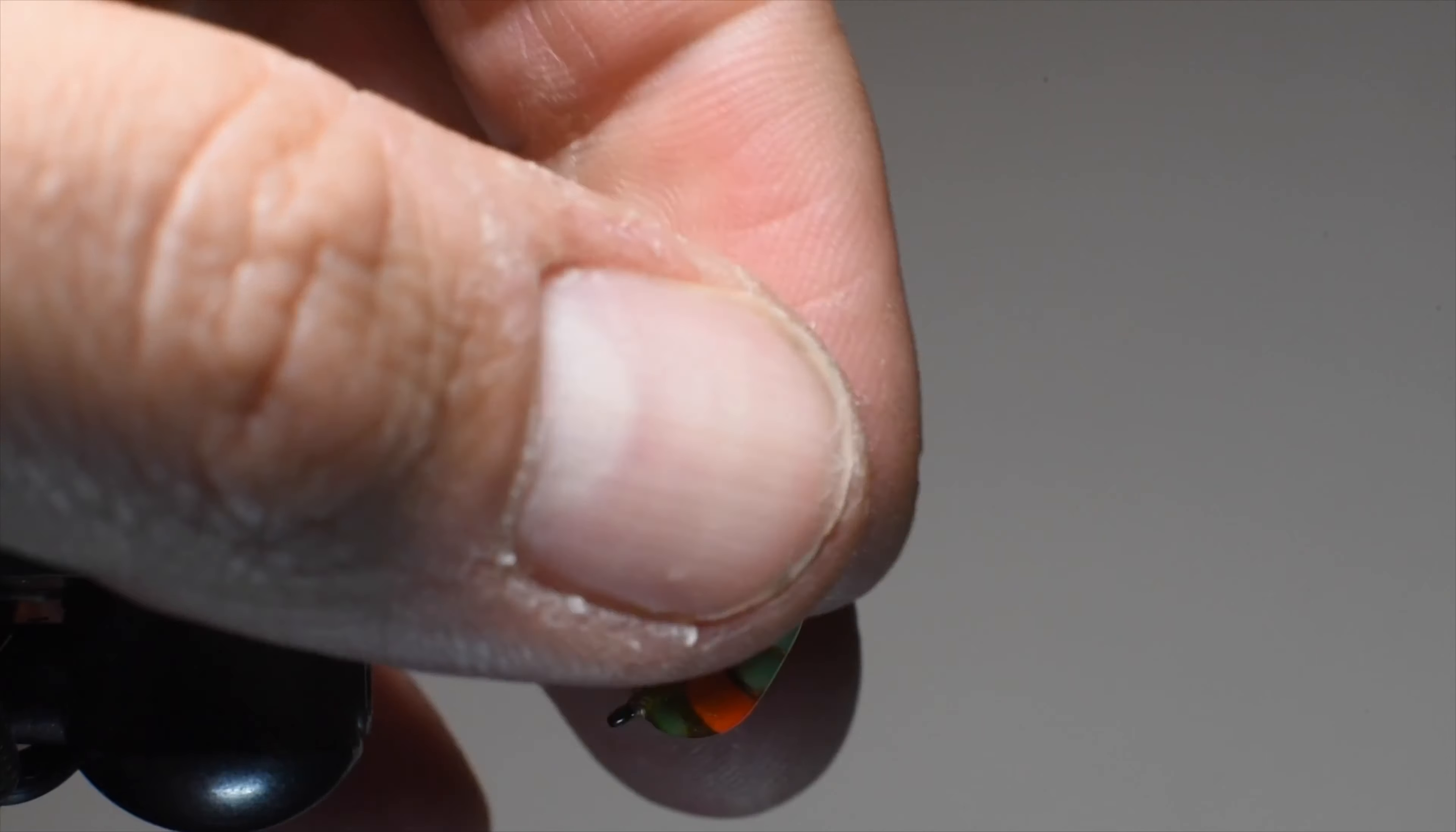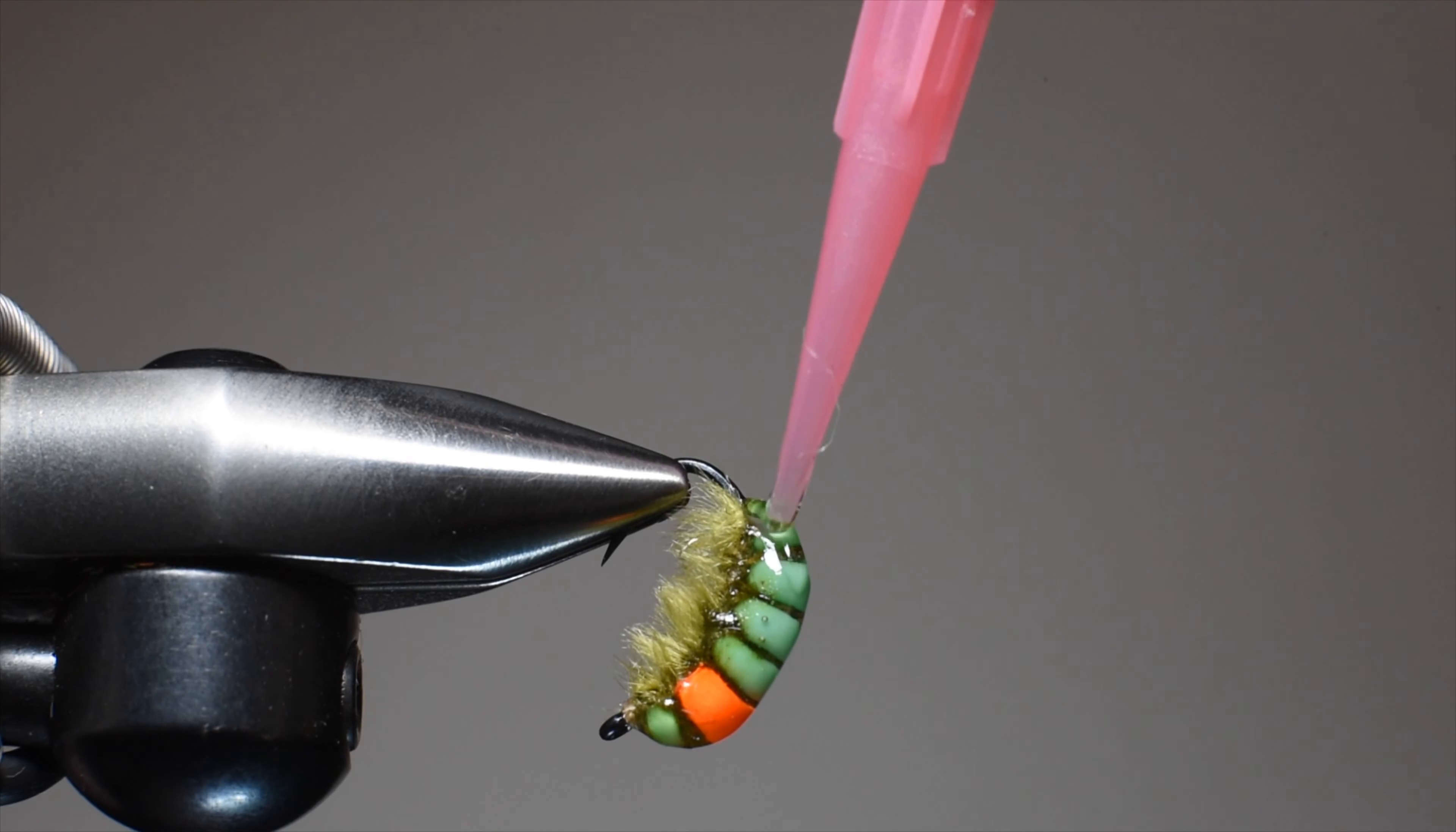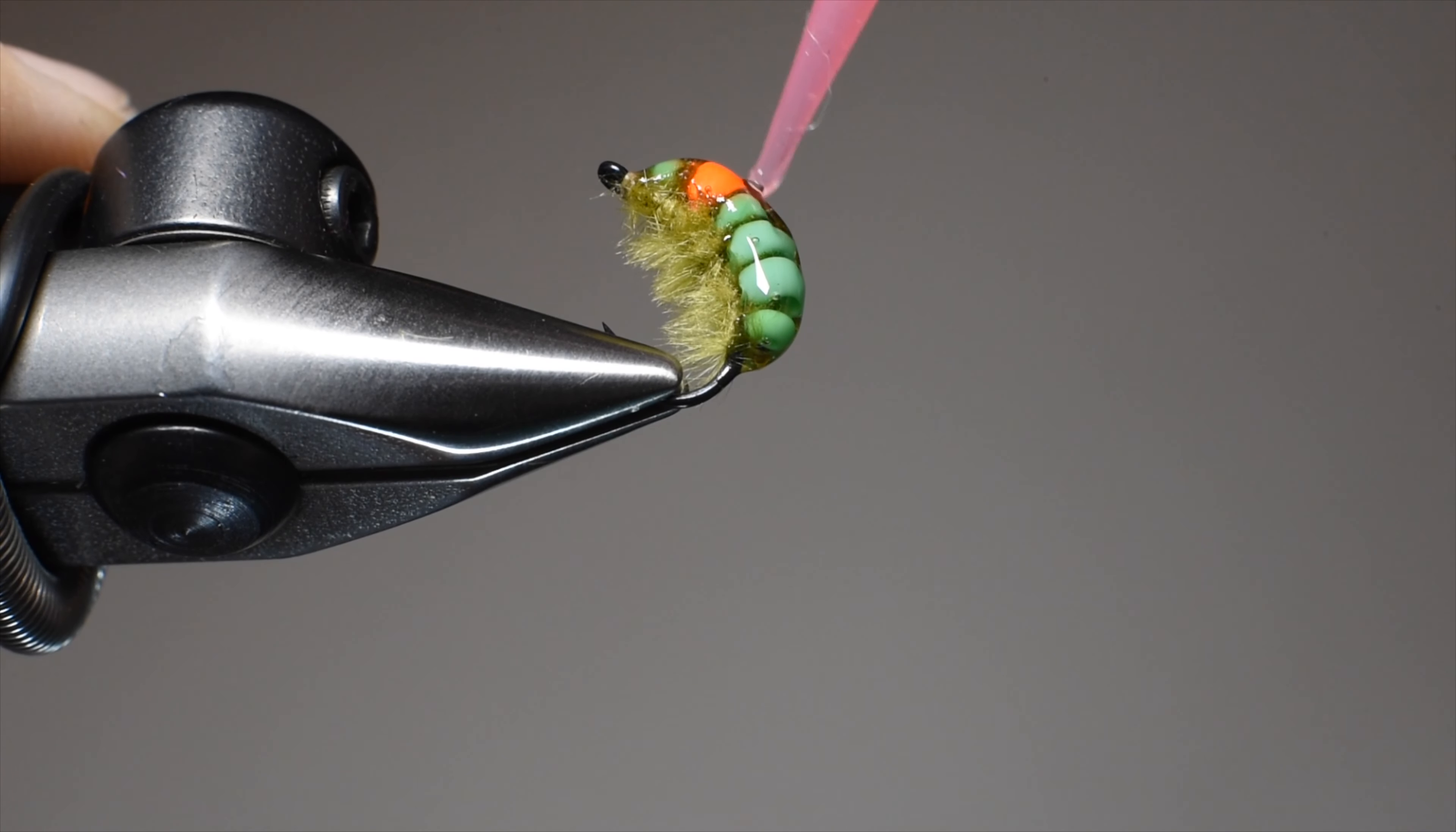Let's adjust it in our vise so we can get this butt end or tail end. It's a little difficult because I don't want to get resin all over the vise, so I adjust it like this. I can lay a single bead right there to the shank and work it, spreading it onto the sides, making sure to get both sides.